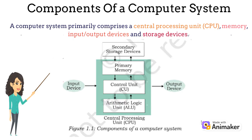Here we can see the components of a computer system and how they interact with one another. There are four main components namely input unit, output unit, CPU, and the secondary storage device. We will look in detail about each component further in the video, but first let us understand the basic functionality of each.